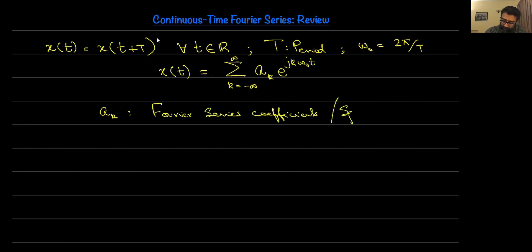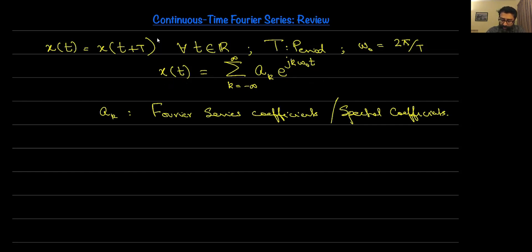The coefficients A sub K are sometimes also referred to as spectral coefficients. A sub K is a complex number that represents the contribution that the complex exponential E raised to J K omega naught T has in making up the periodic signal X(T). The Fourier series representation does not always exist; however, most practical signals satisfy the Dirichlet conditions, and if they do, their Fourier series representation will exist. We will only deal with those signals in this class.